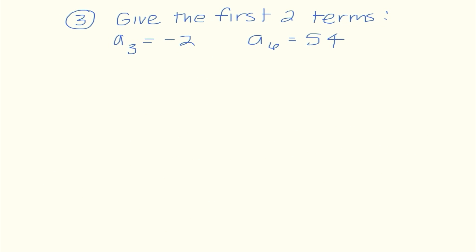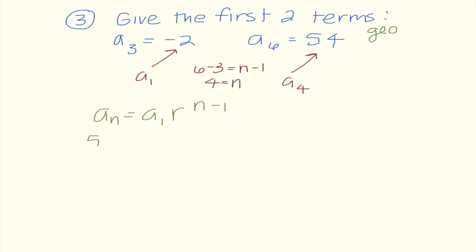Number 3 is asking me to give the first two terms of the geometric sequence. I'm going to treat a sub 3 as our temporary first term. I know 6 minus 3 has to equal n minus 1, so I get 4 as the term in the sequence. Using a sub n equals a sub 1 times r to the n minus 1 power: 54 equals negative 2 times r to the 4 minus 1 power. I'm already thinking the ratio is going to be negative because I have a positive value and a negative value.